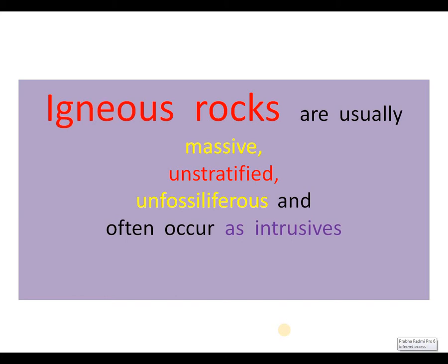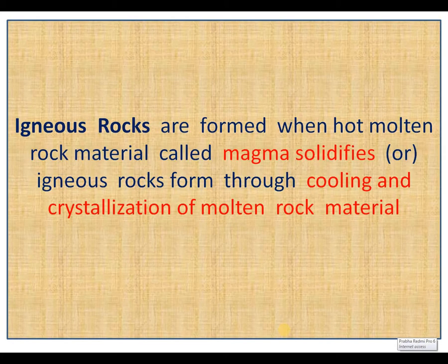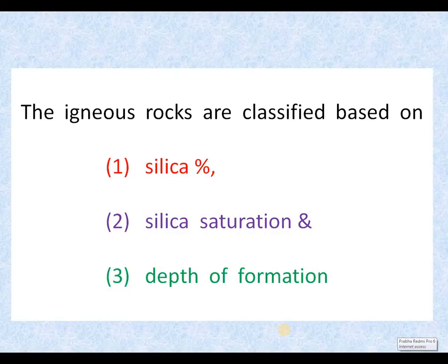Igneous Rocks are usually massive, unstratified, unfossiliferous and occur as intrusives. Igneous Rocks are formed when hot molten rock material called magma solidifies. In other words, Igneous Rocks form through the cooling and crystallization of molten rock material.